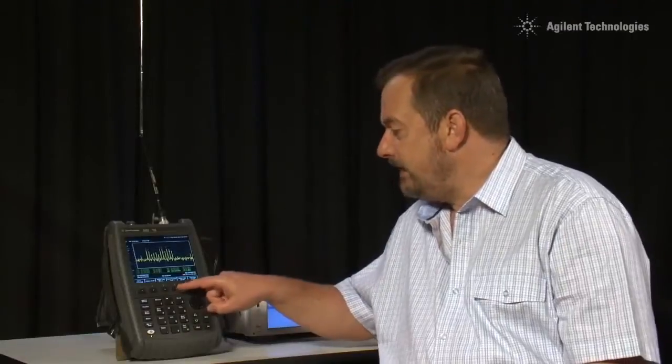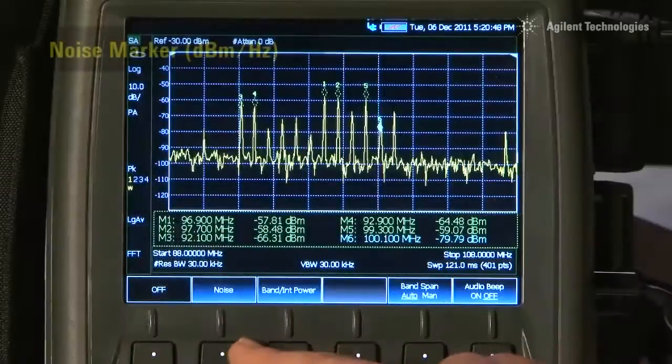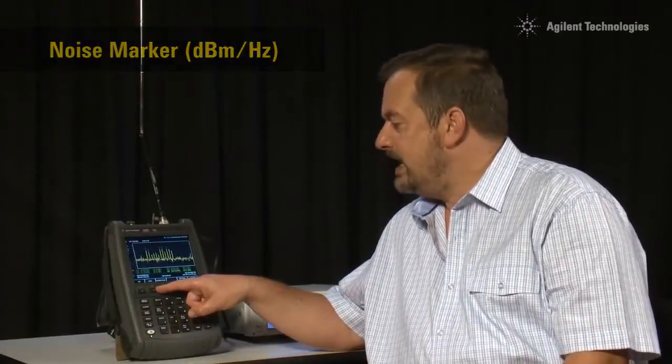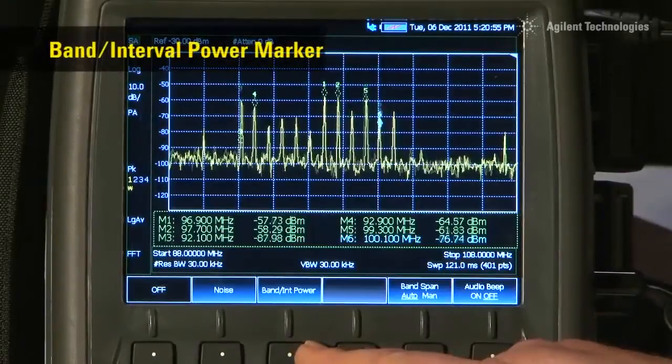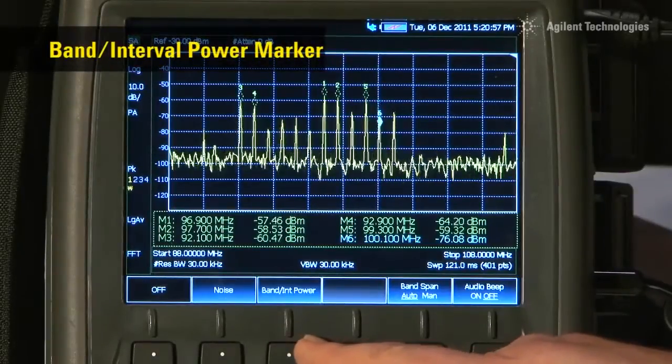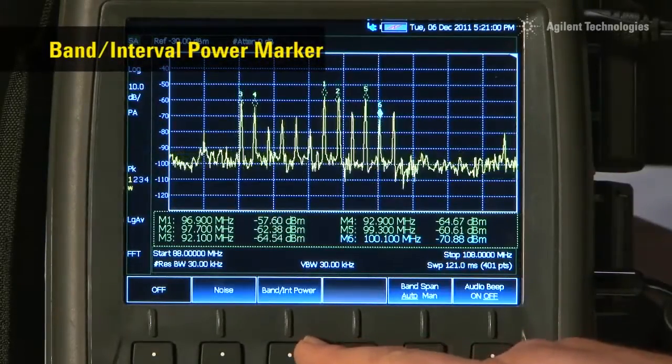If I press the marker function button, we can also turn on the noise marker, where we can measure carrier-to-noise ratio, normalized to a 1 Hz bandwidth. We have even got the band or interval marker for measuring the modulation or band power of a given transmission.